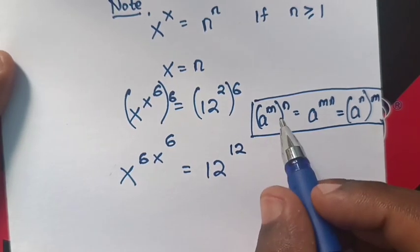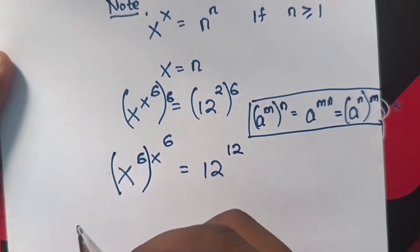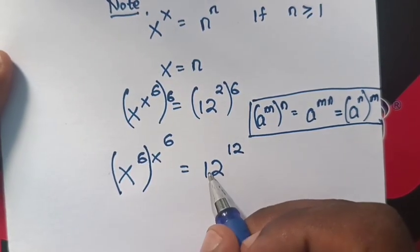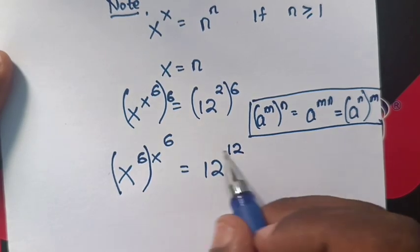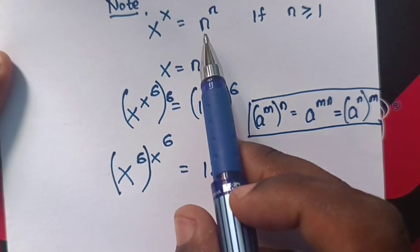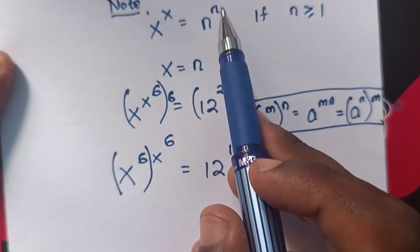Now from this rule, we will apply the bracket. So x power 6 will compare with 12, and power of x power 6 will compare with 12. As in the rule, x will compare with n and power of x will compare with n.